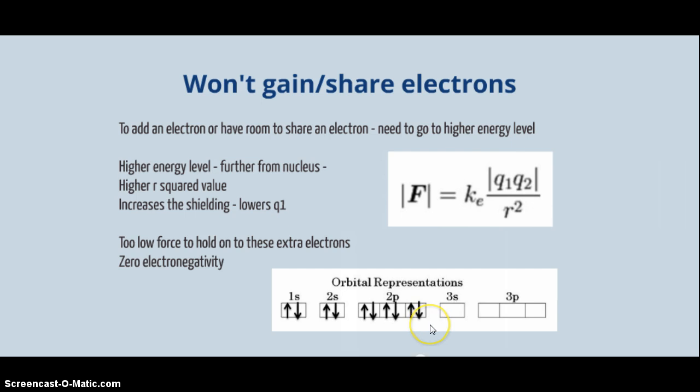When you have lots of shielding, you have very low effective nuclear charge. So that q1 value goes down. So if q1 goes down and r-squared goes up, the force is very, very small. And this force, then, is too low to hold on to any new or extra electrons. And remember, that gives them a zero electronegativity. So having a full shell makes it difficult to gain electrons.